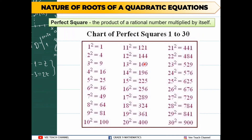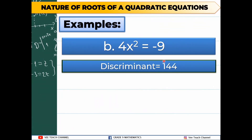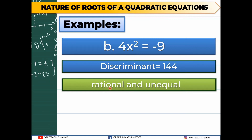When you multiply a number by itself, that result is the perfect square. Now, the 144 that we got as our discriminant is found at 12 in the chart, because 12 times 12 is 144. So 144 is considered a perfect square. Because it is a perfect square and greater than 0, the nature of our roots is rational and unequal.